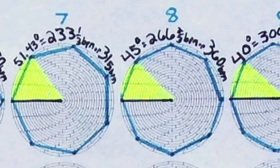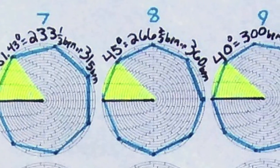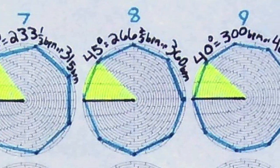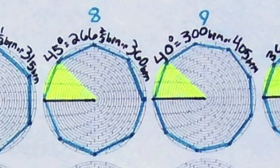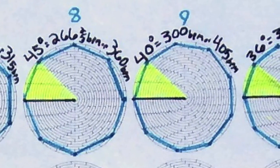7. Heptagon equals 315 BPM at 45, equals 233.3 BPM at 33.3. 8. Octagon equals 360 BPM at 45,